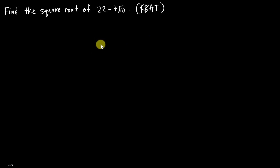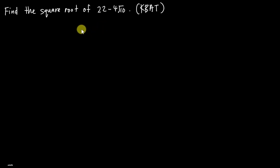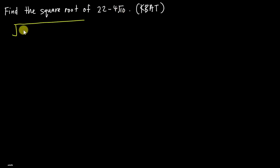Let's have a look at this question — this is one of the questions I discussed in my masterclass. The question asks us to find the square root of the term 22 minus 4√10. So basically, what we want to find is √(22 - 4√10).